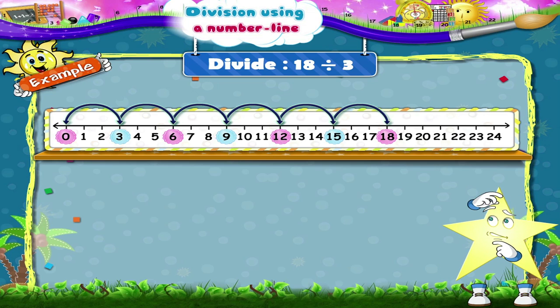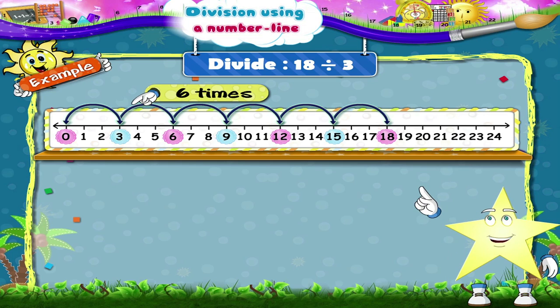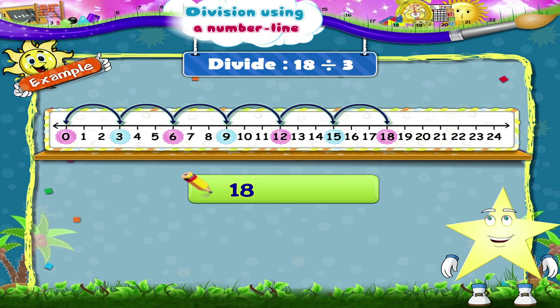How many times did you jump Starry? 6 times. So, 18 divided by 3 is equal to 6.